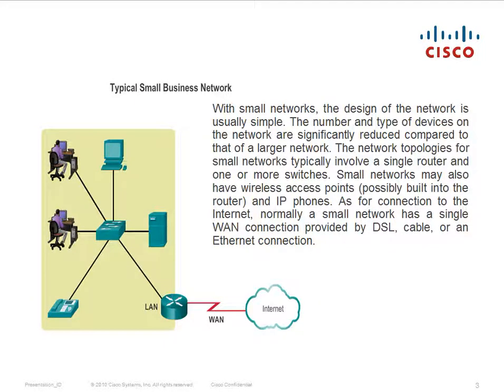With small networks, the design of the network is usually simple. The number and type of devices are significantly reduced compared to a larger network. The network topologies for small networks typically involve a single router and one or more switches, and may also have wireless access points, possibly built into the router, and IP phones. Normally a small network has a single internet connection provided by DSL, cable, or an Ethernet connection.